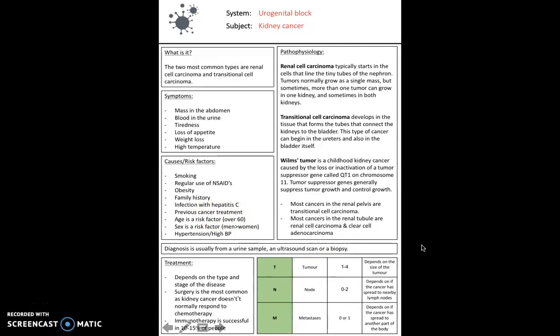Usually it's diagnosed through a urine sample, ultrasound scan, or biopsy. The most common way is through a cystoscopy, where you put a small camera into the bladder and can take a biopsy from where you think the kidney cancer is.